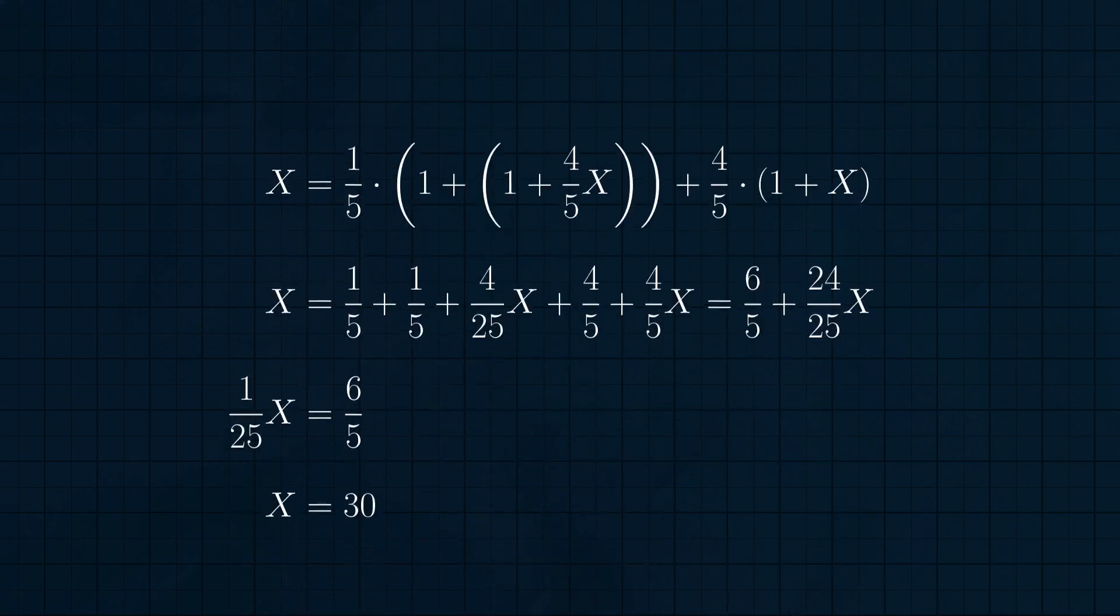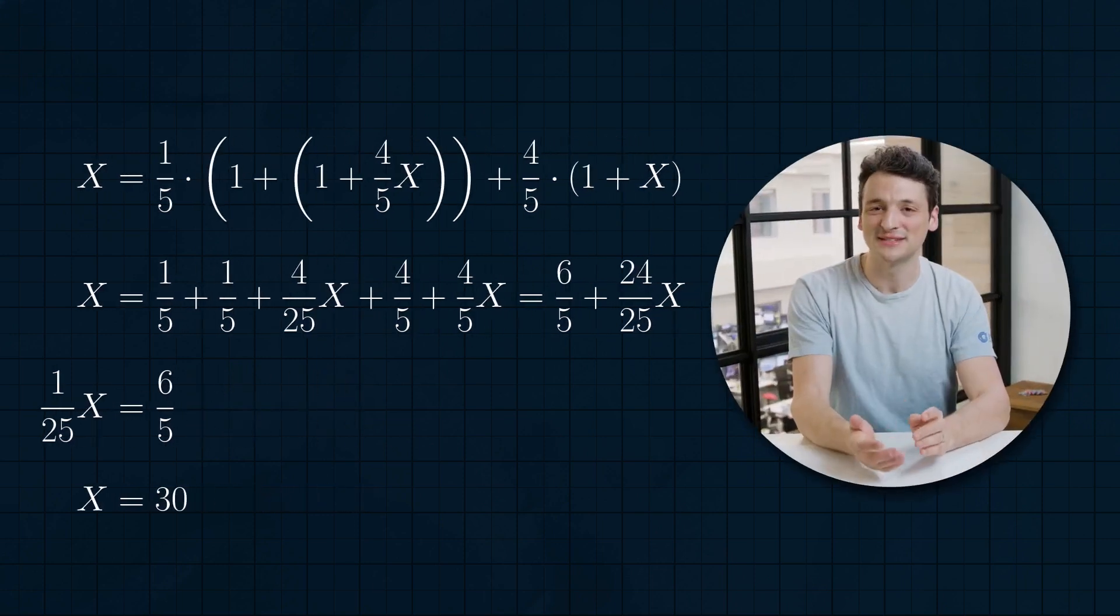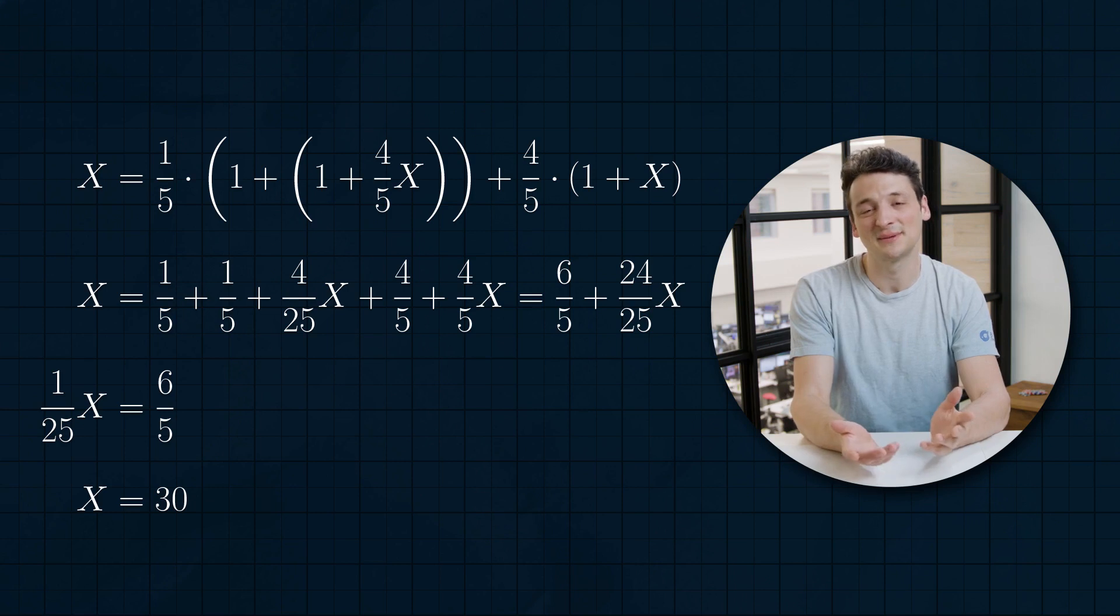Plugging this back into the first equation, we've eliminated y and can solve for x to get x equals 30. So our intuitive answer 25 wasn't correct this time. I wonder if you can come up with an explanation for that. And maybe you can find a way to generalize some of our other approaches to the first problem to solve this two-shot case.